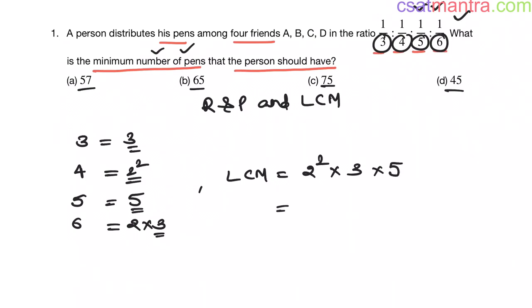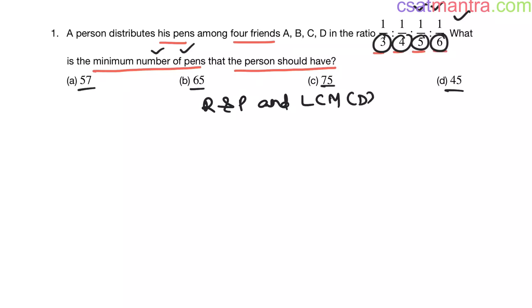So LCM is 2 times 3, bringing 1 to this side using a simplification trick, 2 times 5, 6 times 10. This is 60. Since LCM of denominators equals 60, now I am multiplying all these fractions with 60 to convert them into integers.